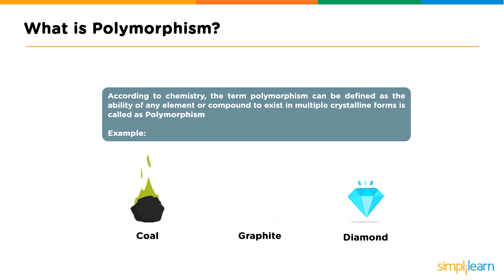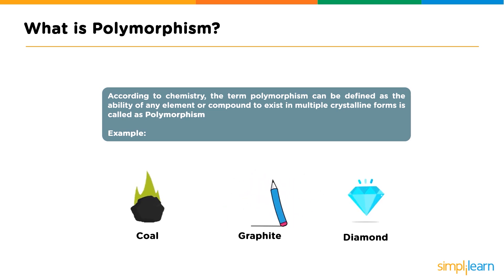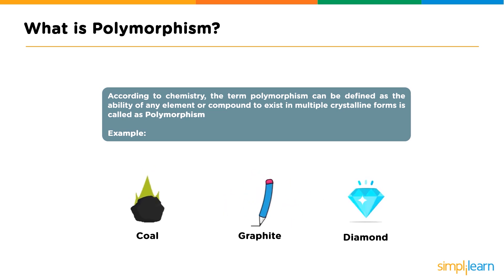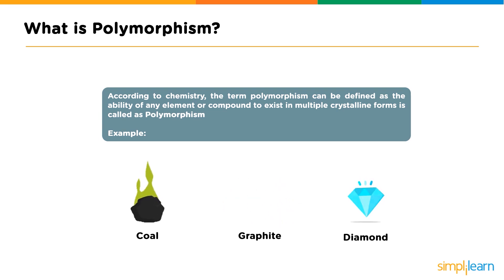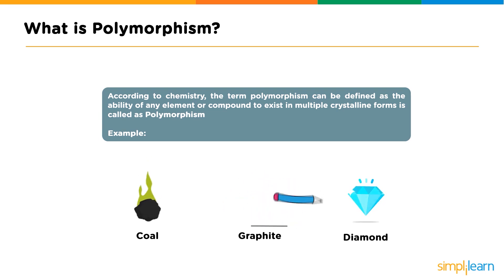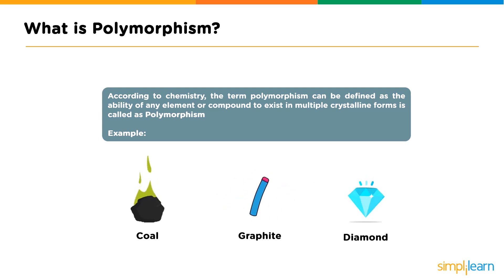What is polymorphism? According to chemistry, the term polymorphism can be defined as the ability of any element or compound to exist in multiple crystalline forms. This is called polymorphism. For example, if you have the carbon atom, it can come out in different forms in coal, graphite, and diamond.